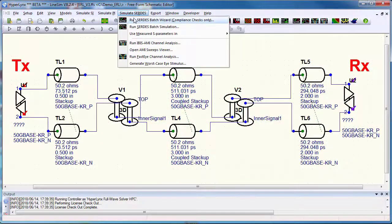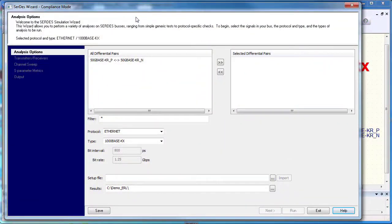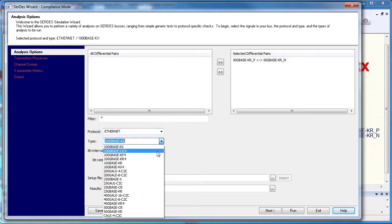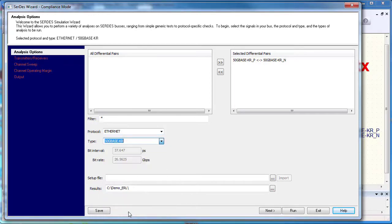To calculate ERL, the user sets up and runs the SerDes compliance wizard in the usual manner, choosing one of the different Ethernet standards that supports ERL as one of its calculation metrics. At that point, the SerDes compliance analysis is run and the results are integrated into the report.